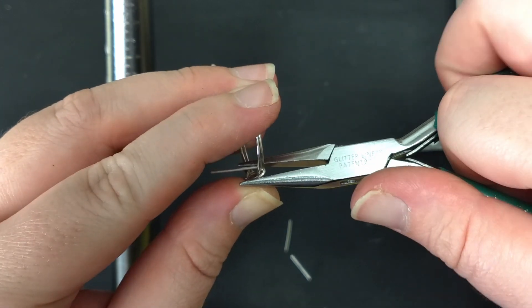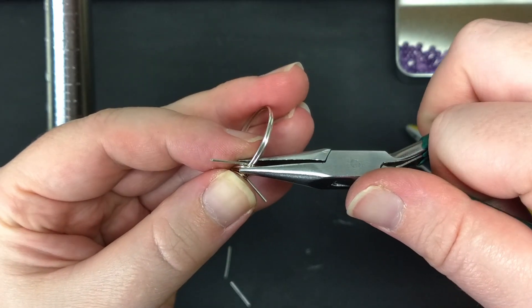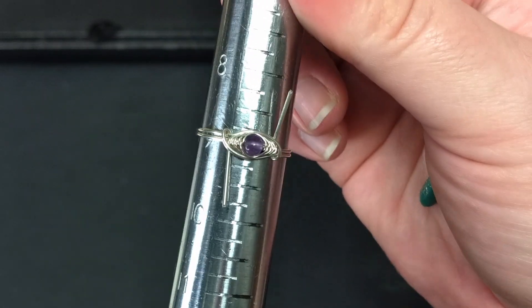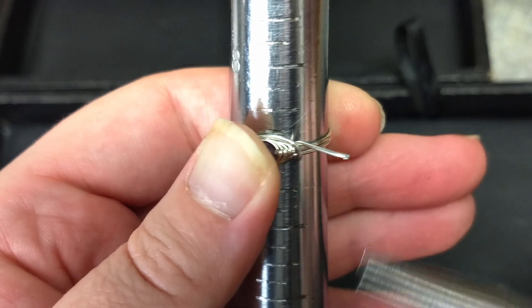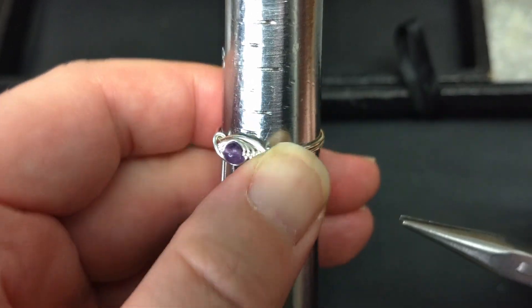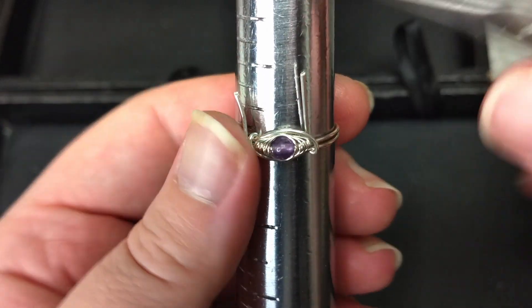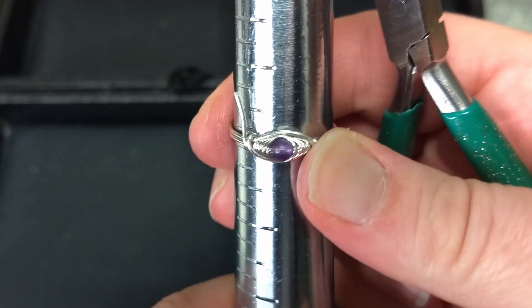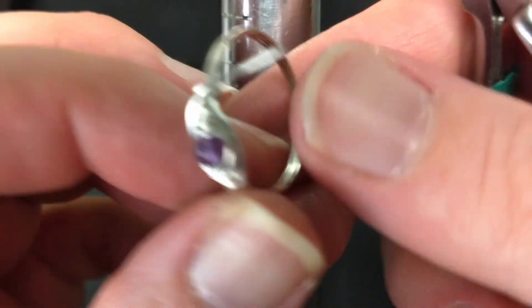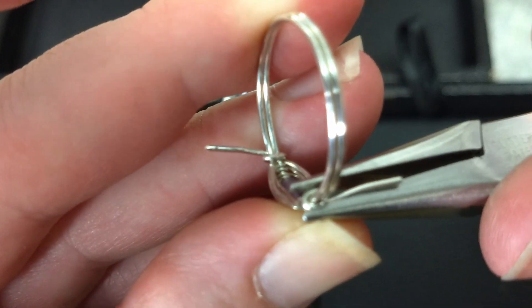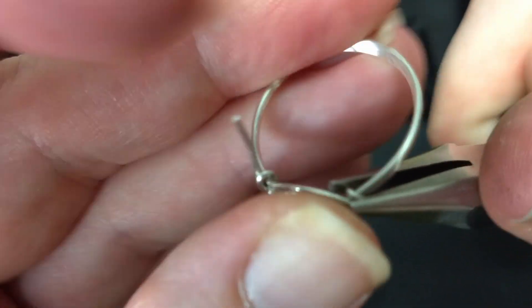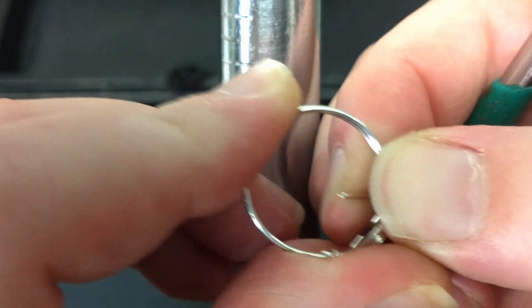Now go back in with your chain nose pliers and tighten the wraps evenly. Put the ring back on the ring mandrel and pull each wire down over the front of the ring. Tighten each side of the ring again with the chain nose pliers. Push the wire tails towards the inside of the ring band and then trim.